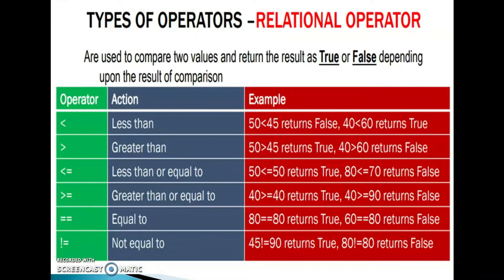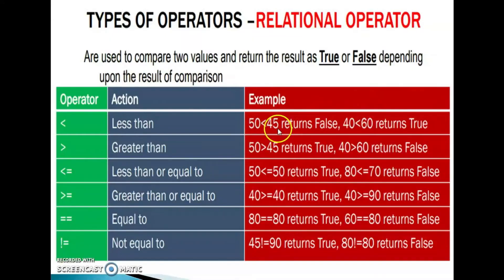Types of relational operators. These operators are used to compare two values and return the result as true or false depending upon the result of comparison. The relational or comparison operators are: less than, greater than, less than or equal to, greater than or equal to, equal to (==), and not equal to. Example: 50 less than 45 returns false. 40 less than 60 returns true.